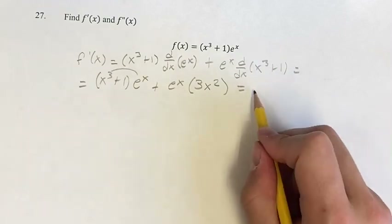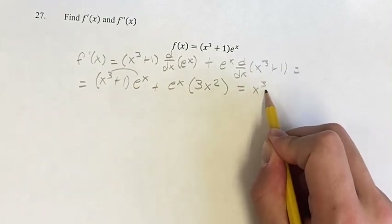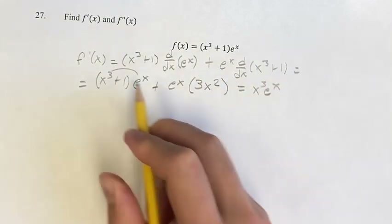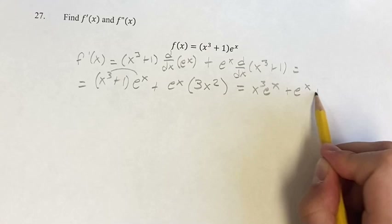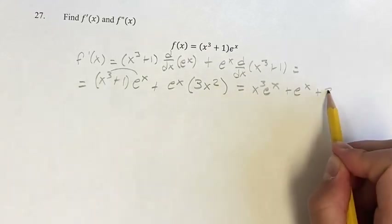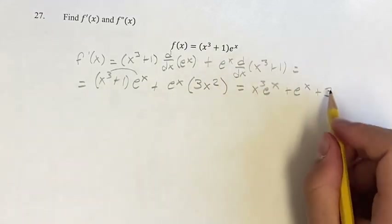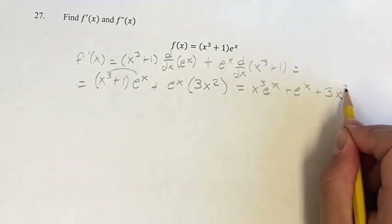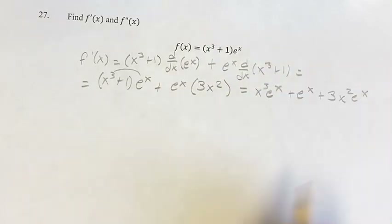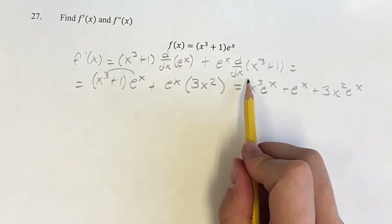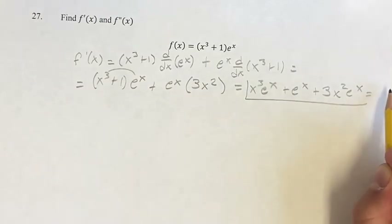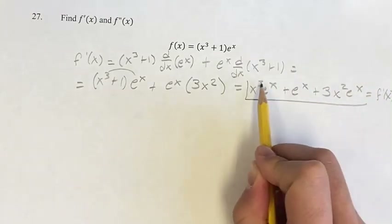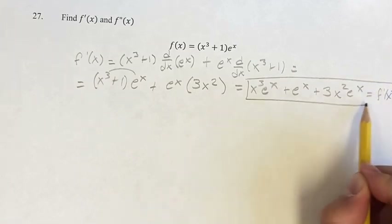Simplifying this, we get x cubed e to the x plus e to the x plus 3x squared e to the x. And this is your first derivative.